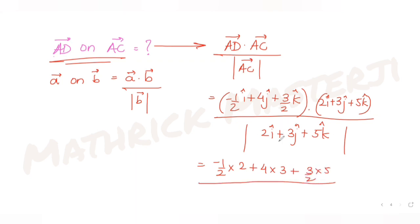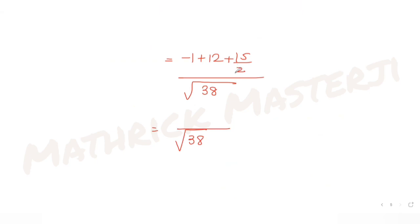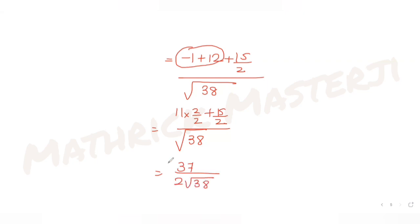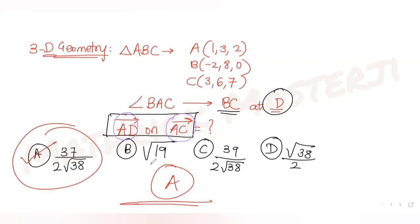Taking the dot product: (-1/2)(2) + (4)(3) + (3/2)(5) = -1 + 12 + 15/2. Making the denominator 2: that gives (−2 + 24 + 15)/2 = 37/2. The magnitude of AC = √(4 + 9 + 25) = √38. So the length of projection = 37/(2√38), which matches answer choice A.